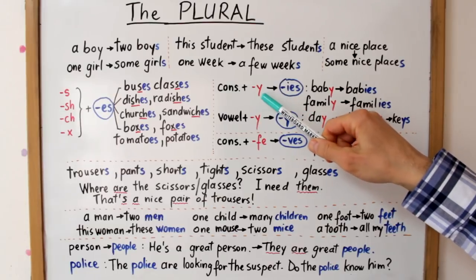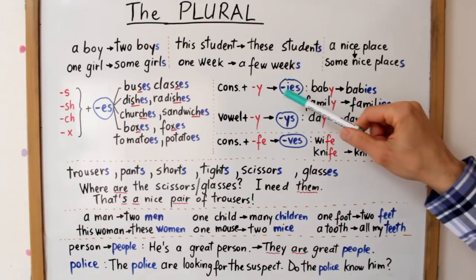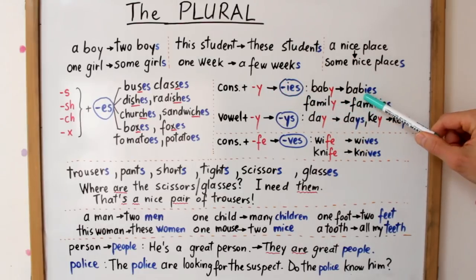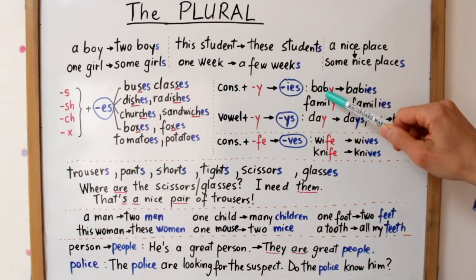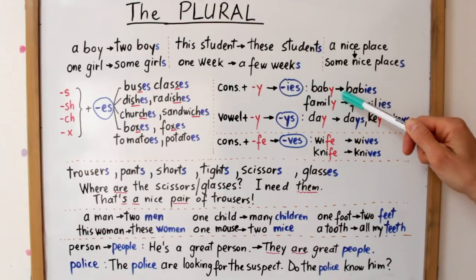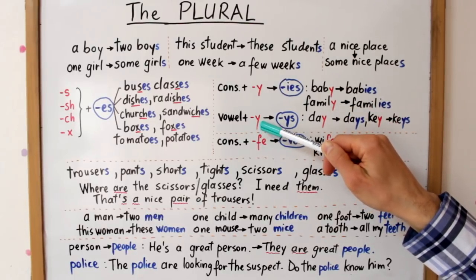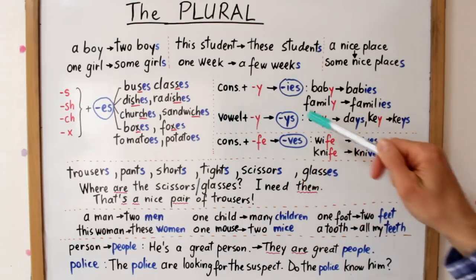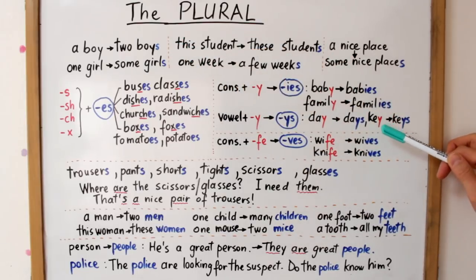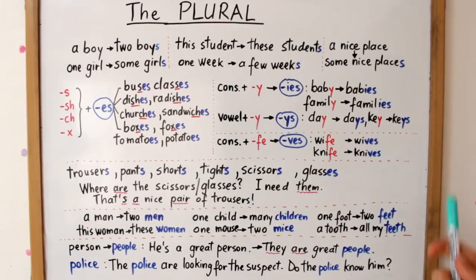Avem apoi o regulă de scriere pentru substantivele terminate în Y, precum baby sau family. Când Y final este precedat de o consoană, Y se transformă la plural în IES pronunțat IZ: baby / babies (bebeluș / bebeluși); family / families (familie / familii). Dacă însă Y final este precedat de o vocală, se adaugă pur și simplu S: day / days (zi / zile); key / keys (cheie / chei).